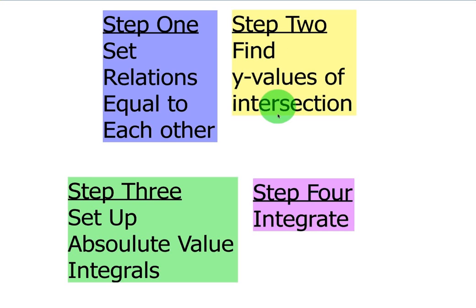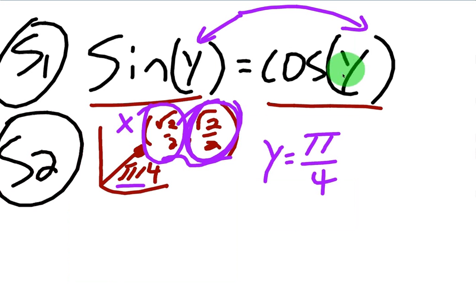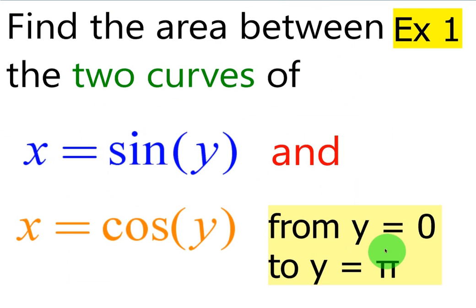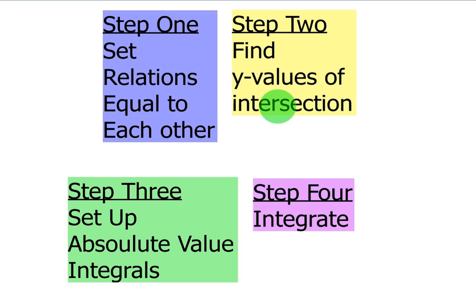We're finding the y values of the intersection. The real question is where does sine equal cosine on the unit circle, and that is at π/4. At π/4, you have the point (√2/2, √2/2). Sine and cosine are based on x and y of this point, and this is where they equal each other at π/4. So y equals π/4 — and we're only worried about from 0 to pi, since that's where we're finding the area between the two curves.